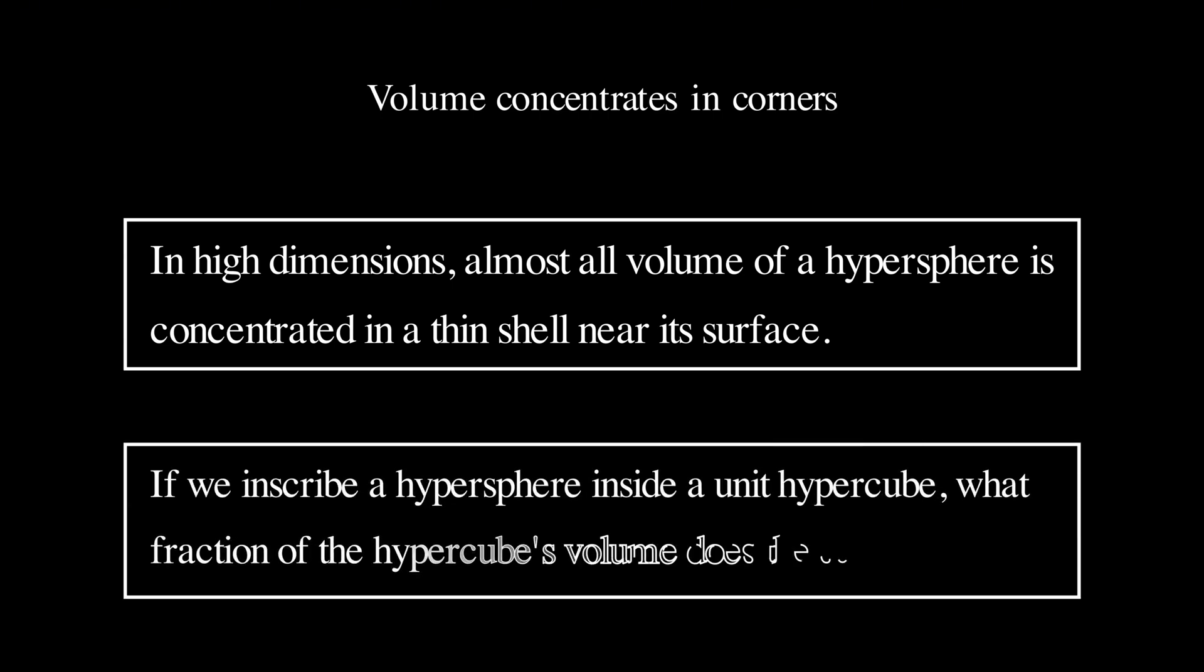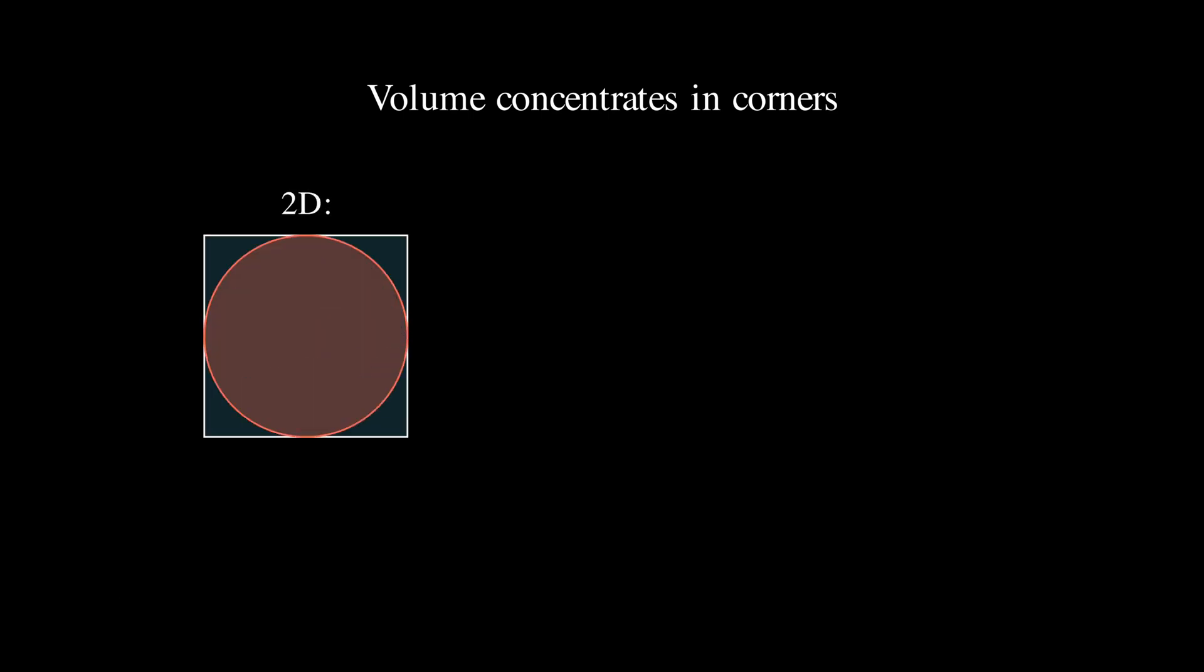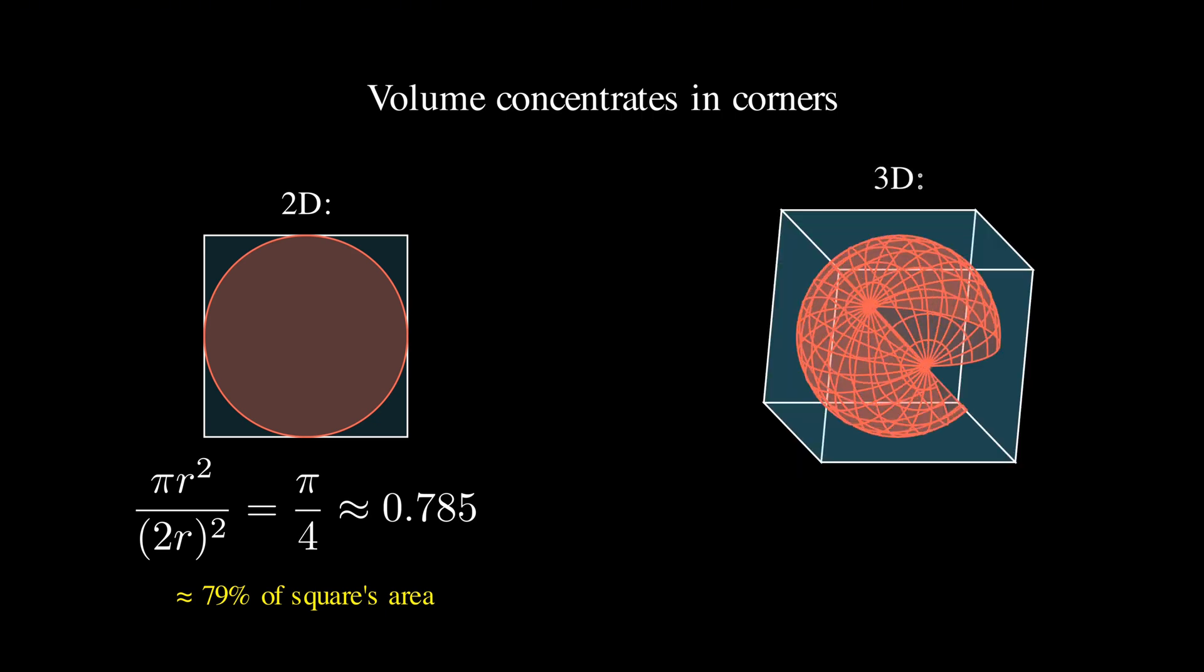For instance, let's consider the unit hypercube with side length of 1, centered at the origin. If we inscribe a hypersphere inside it, touching each face, what fraction of the hypercube's volume does this sphere take up? In 2D, this ratio is pi over 4, approximately 0.785, or about 79% of the square's area. In 3D, this equals 4 pi divided by 3 divided by 8, approximately 0.524, or about 52% of the cube's volume.